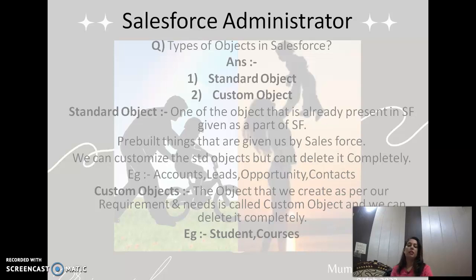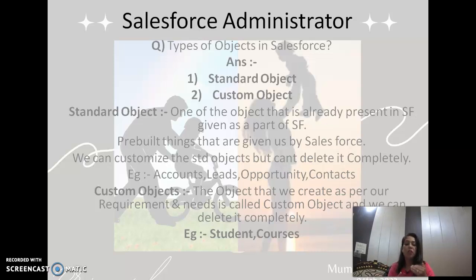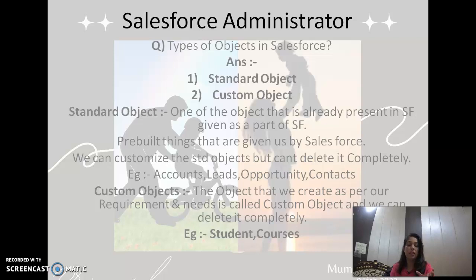Next question: what types of objects does Salesforce have? We have two kinds of objects: standard objects and custom objects. A standard object is one that is already present in Salesforce, given as a part of Salesforce. These are some pre-built things given to us by Salesforce, similar to pre-built templates in our phones and PCs. We can customize these standard objects as per our needs, but we cannot delete them completely.